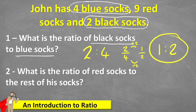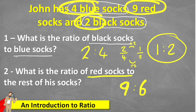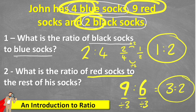The second question says: what is the ratio of red socks to the rest of the socks? This is a two-step problem. I have 9 red socks, so I know I'm starting with 9 to something. I need to calculate the blue and black socks combined: 2 plus 4 is 6. So my ratio is 9 to 6. I think I can simplify this — whatever I do to one number I must do to the other, using multiplication or division. I can divide 9 by 3, and also divide 6 by 3: 9 divided by 3 equals 3, and 6 divided by 3 equals 2. So my simplified ratio is 3 to 2.